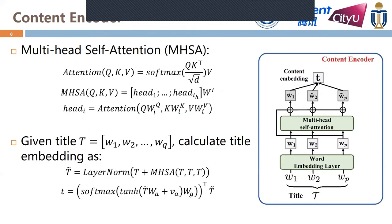For the content encoder part, the content encoder consists of three sub-layers. The first sub-layer is a word embedding layer, which converts words into word embedding vectors. The second sub-layer is a multi-head self-attention layer, which can capture the contextual information of each word. The final sub-layer is an aggregation layer, which selects important words to generate the title representation. Given the title t, we calculate the title embedding using layer norm and softmax.